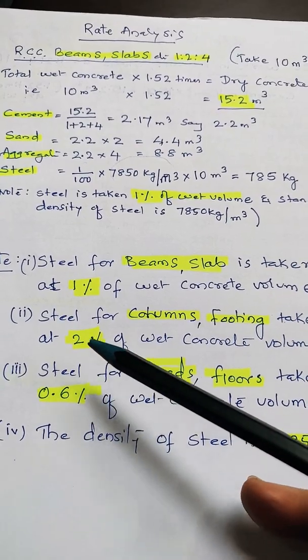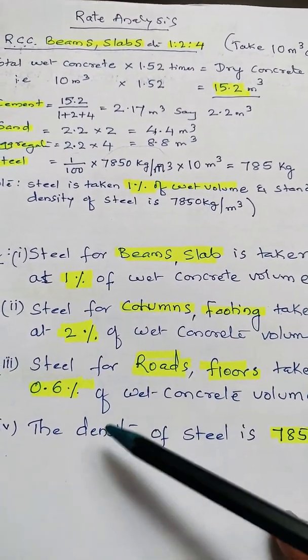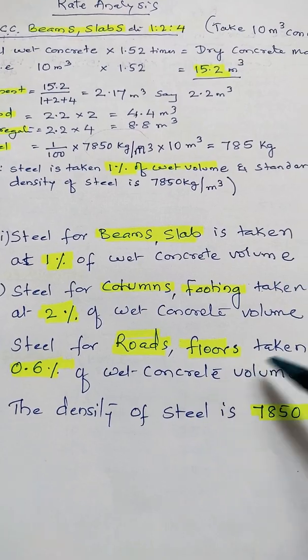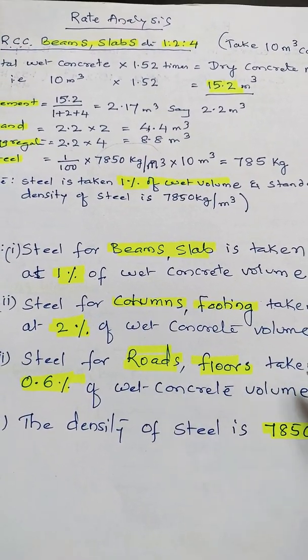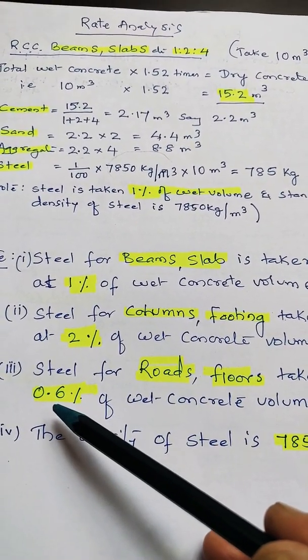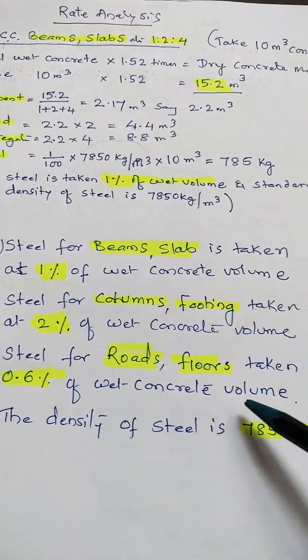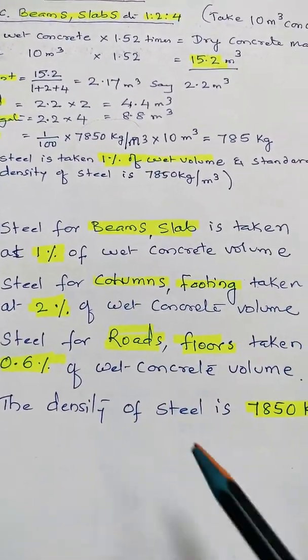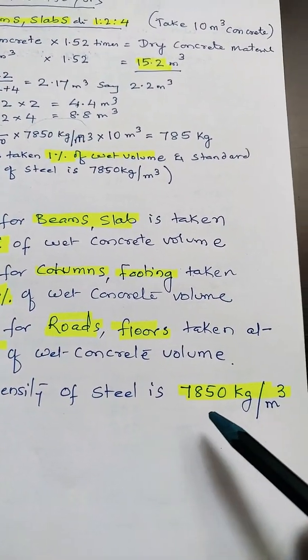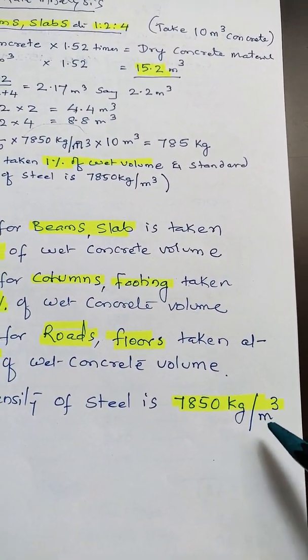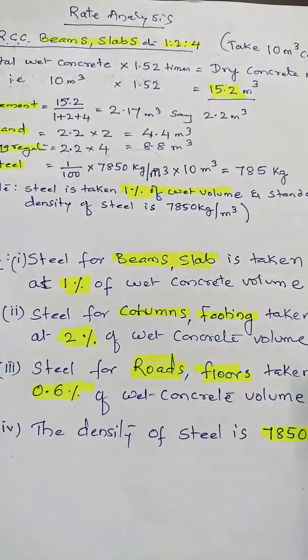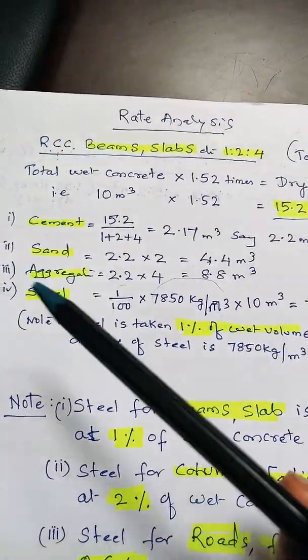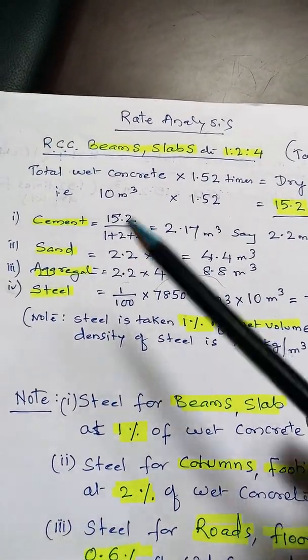For roads or floor level concreting, we have to take 0.6% of the wet concrete volume. These are standard percentages. The density standard is 7850 kg per meter cube. This we have to remember.